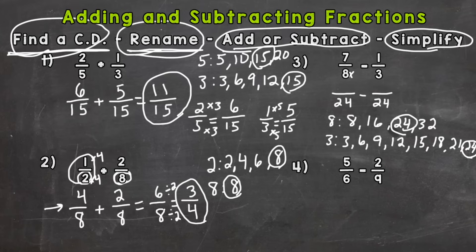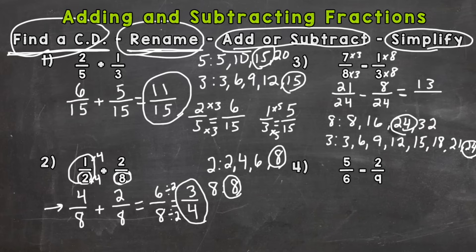Renaming the fractions: eight times three is twenty-four, and seven times three is twenty-one, giving us twenty-one twenty-fourths. Three times eight gives the denominator of twenty-four, and one times eight is eight, giving us eight twenty-fourths. Subtracting: twenty-one minus eight equals thirteen, keeping the denominator twenty-four. The only common factor between thirteen and twenty-four is one, so we cannot simplify. The answer to number three is thirteen twenty-fourths. Subtraction follows the exact same steps as addition — we just subtract instead of add.